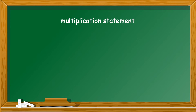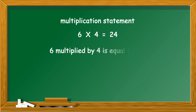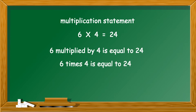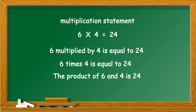You have already learnt about a multiplication statement. When you multiply two numbers and write the product, it is called a multiplication statement. For example, 6 into 4 is equal to 24. This can be read as: 6 multiplied by 4 is equal to 24; 6 times 4 is equal to 24; the product of 6 and 4 is 24; or the 6th multiple of 4 is 24.